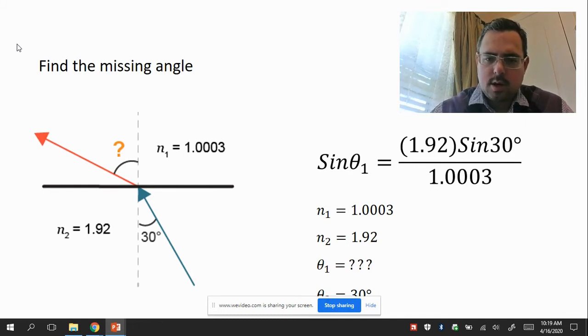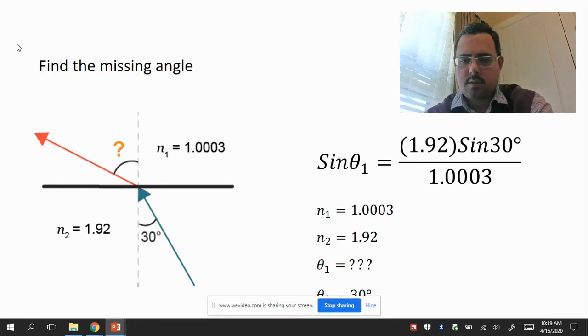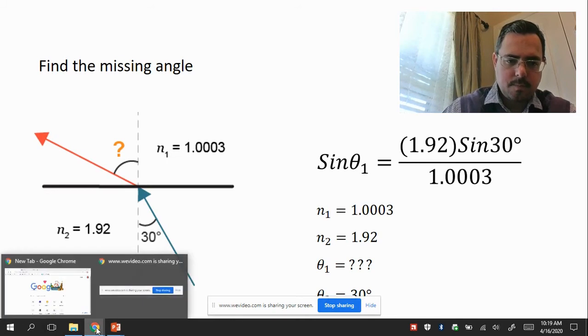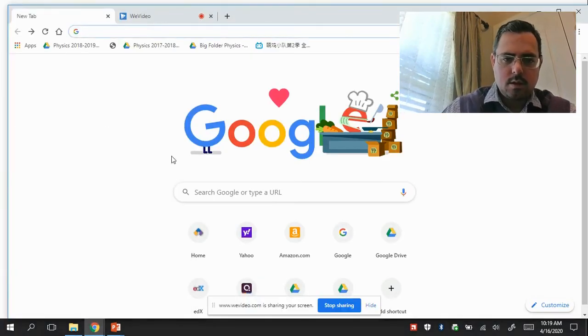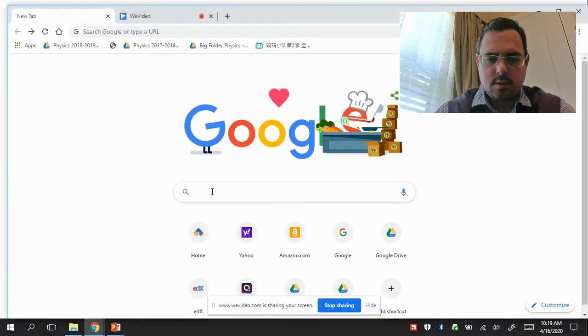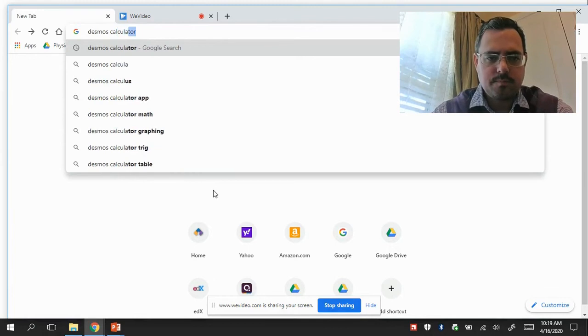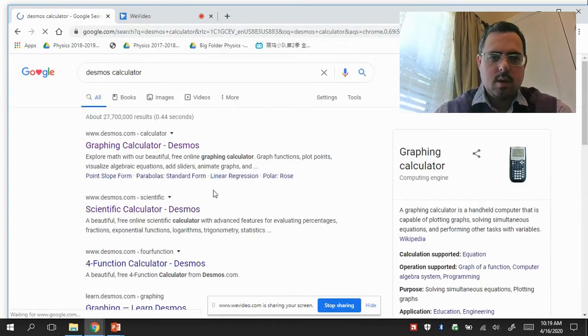Okay, so the next step is going to be going to an online calculator and figuring out what all this stuff on the right side of the equal sign equals. So let's do that. I'm just going to Google, I'm going to type in Desmos, it's D-E-S-M-O-S calculator. Press enter.